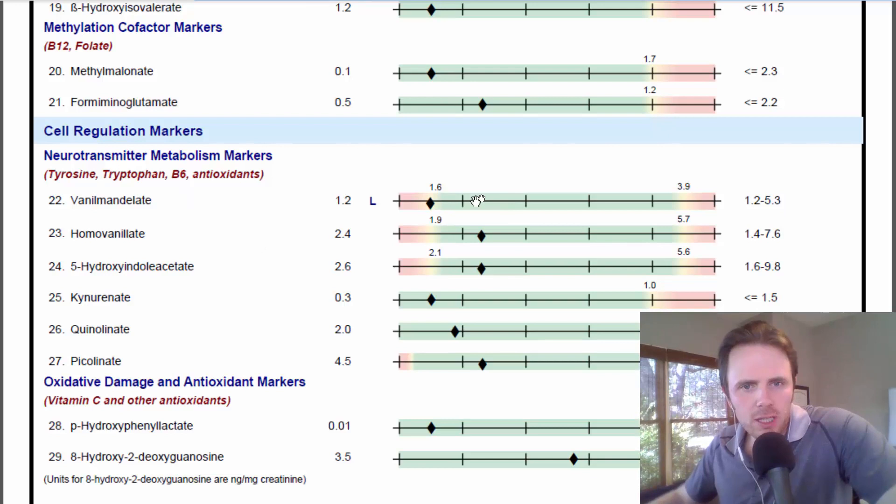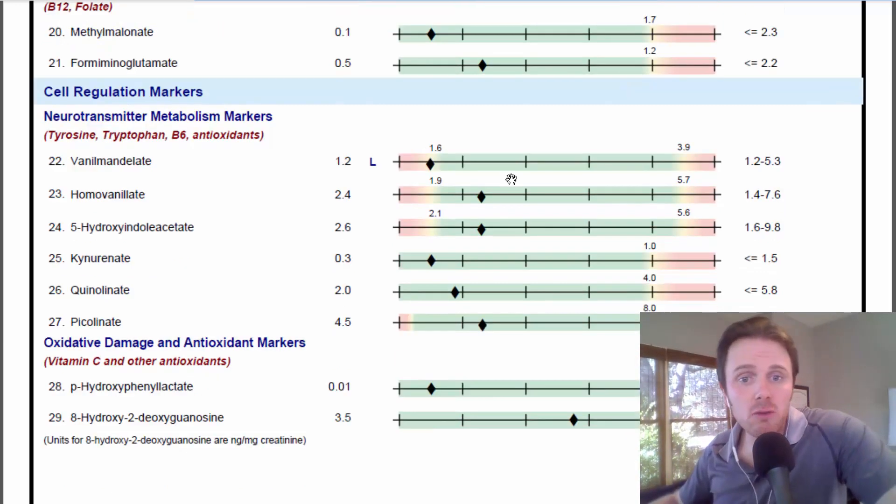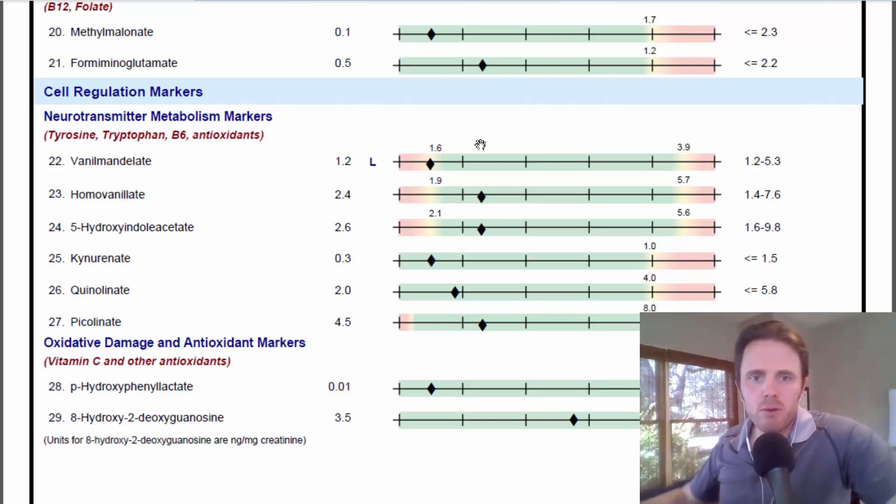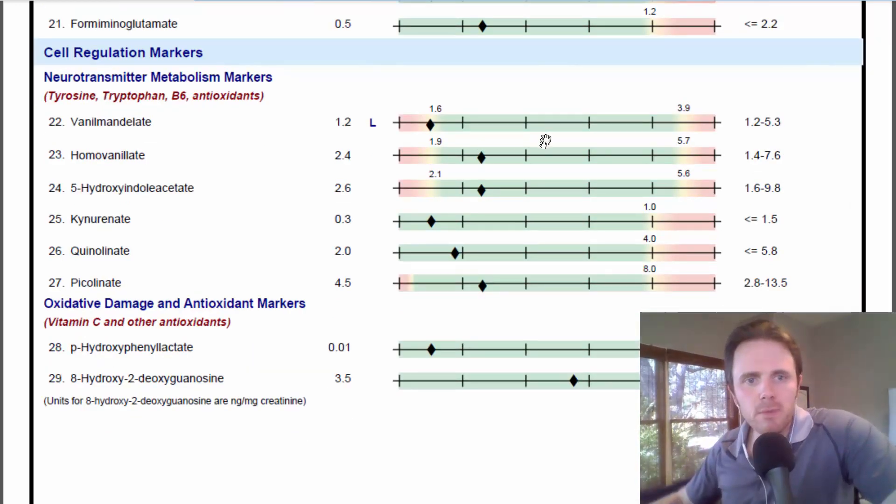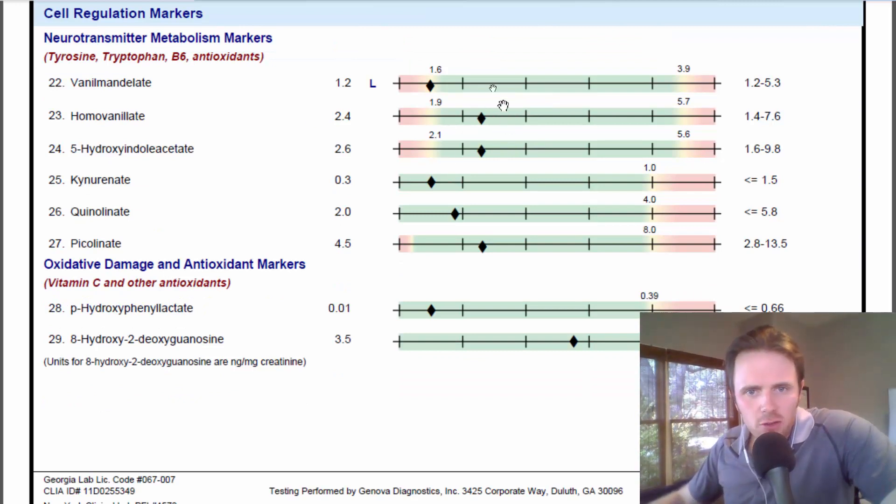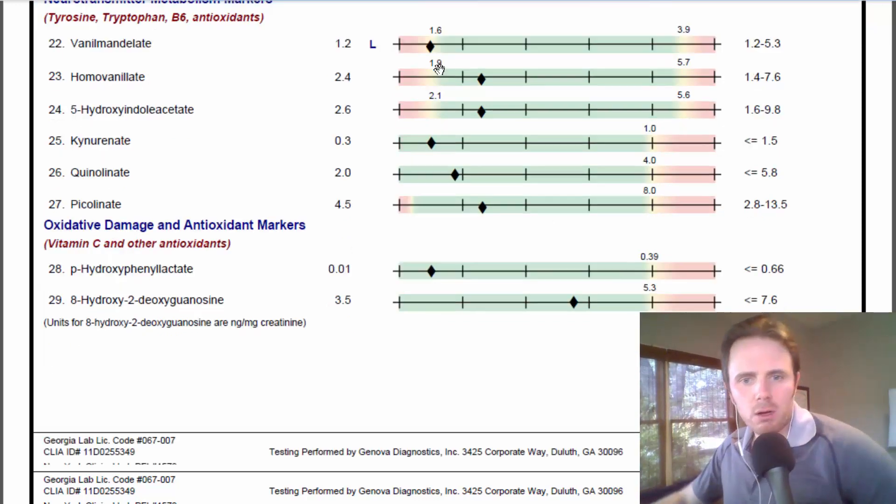Neurotransmitters, you can see this person has low vanillamandelate, which means lower adrenaline. So their ability to regulate stress and adapt to stress is going to be thwarted. There may even be some anxiety too, very possible. Or inability to focus. When you don't have enough adrenaline, enough dopamine, you typically lose that ability to focus at longer ends of time there. Homovanillate and 5-hydroxyindolacetate, that's serotonin and dopamine. Those are okay. Kynurenate, a little bit low. That's a marker for B6. Quinolinate and picolinate are markers for brain inflammation. Look okay, but definitely the adrenaline markers are lower.